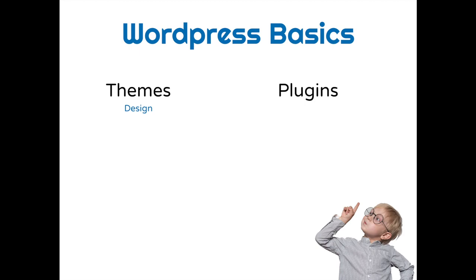You can find and install free WordPress themes from the official WordPress repository, or you can find a premium theme and install it by uploading the theme file to your website. Themes are built by programmers and usually include color settings, font settings, menu locations, and widget locations. Basically, the theme is in charge of the look and feel of various parts of your website, like the header, the footer, the layout of a single post or page, and the archive page which shows a list of published posts.